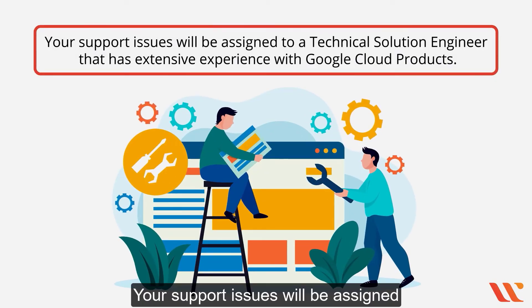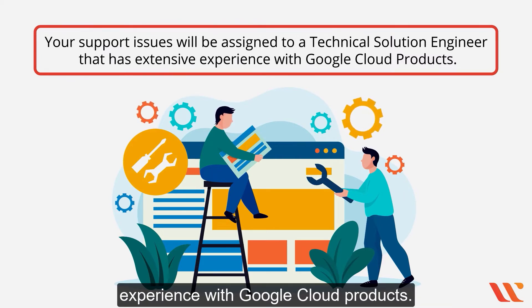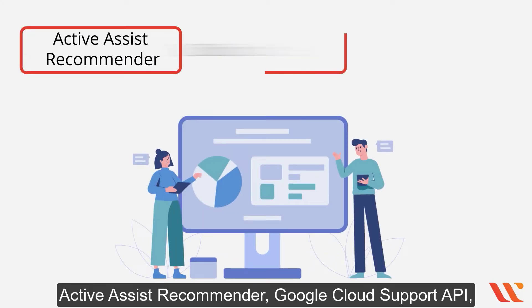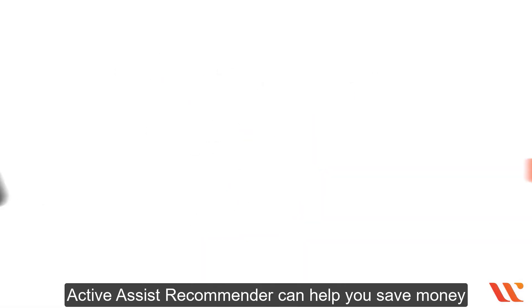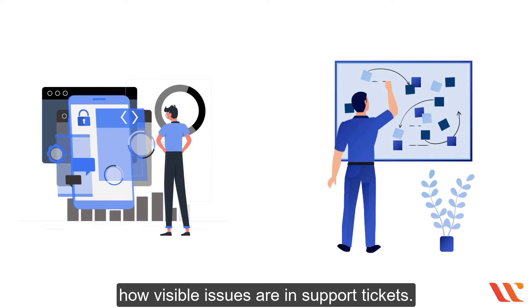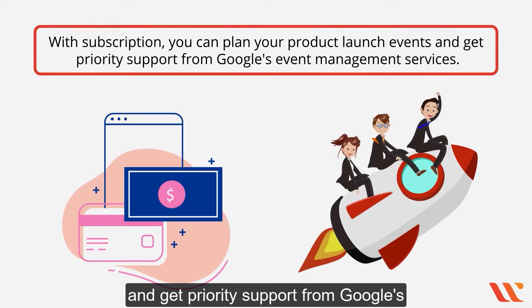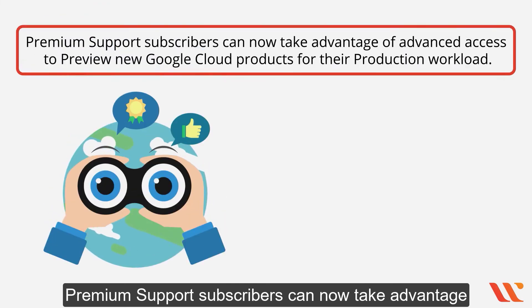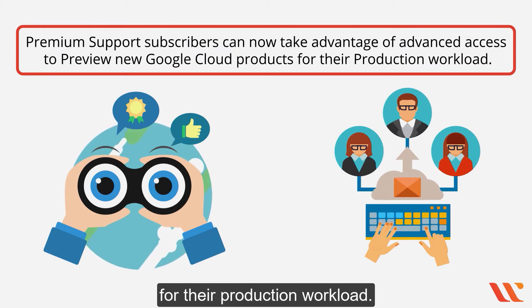Your support issues will be assigned to a technical solution engineer with extensive experience with Google Cloud products. Active Assist Recommender, Cloud Support API, and third-party technical support are all included in premium support. The Cloud Support API allows you to see visible issues in support tickets. With this subscription you can plan product launch events and get priority support from Google's event management services. Premium support subscribers also get advanced access to preview new Google Cloud products for their production workload.